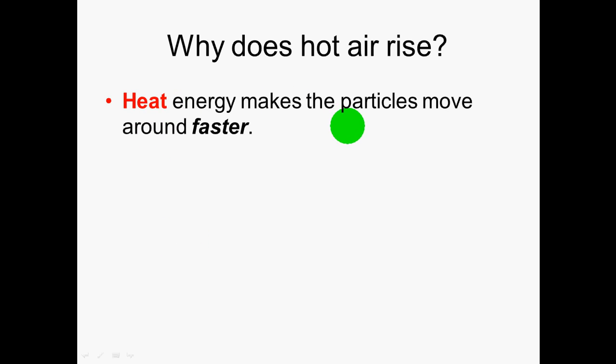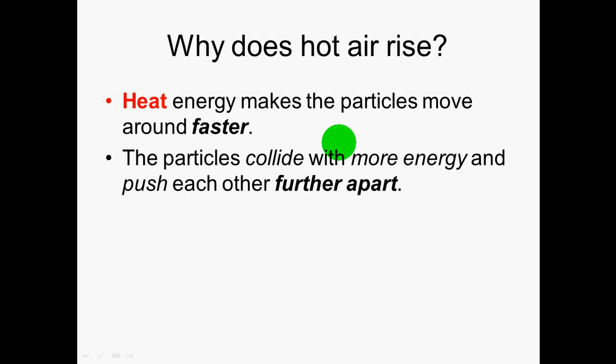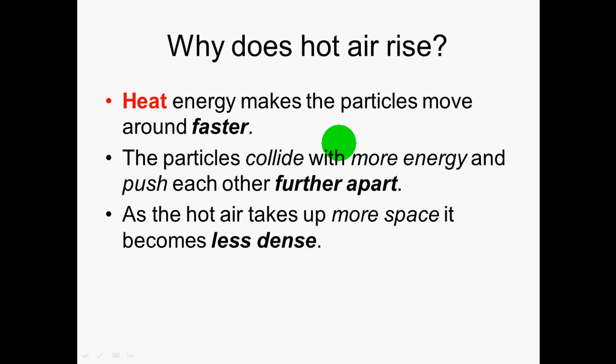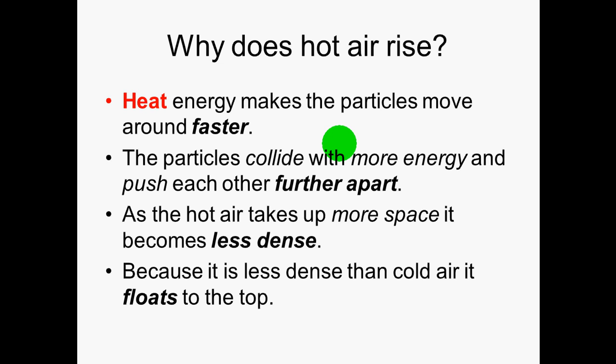The heat energy makes the particles move around faster. When they're moving faster, they bash into each other with more energy and they push each other further apart. So the hot air then takes up more space and it becomes less dense because the same amount of air is taking up more space. Because it's become less dense, it means it's going to float up through the colder air, which is more dense.